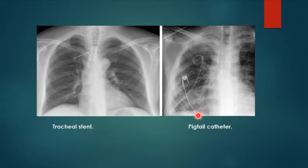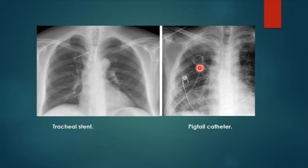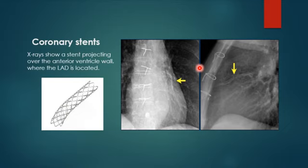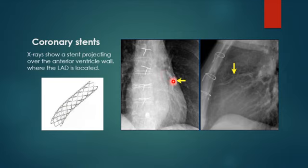This patient has empyema and has had a pigtail catheter inserted — a type of chest drain with a small curved tip that we discussed last time. It is useful for small effusions, empyema, and small pneumothoraces. There is also a coronary stent. The coronary arteries supply the heart from the aorta via the left main and right coronary arteries. The left anterior descending artery commonly develops atherosclerosis. A stent placed there appears as two radiopaque lines in the interventricular groove.